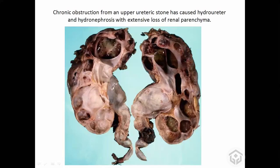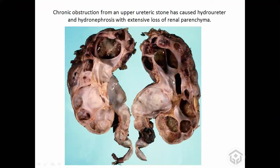In this gross specimen, you can see a stone was blocking the ureter here. Because of that, there is hydro ureter and hydronephrosis, and the kidney is thinned out — this is obstructive uropathy.